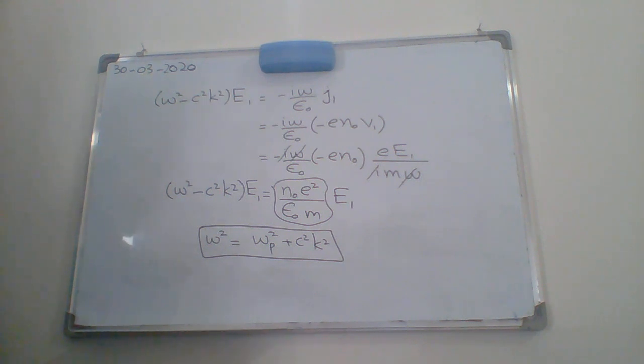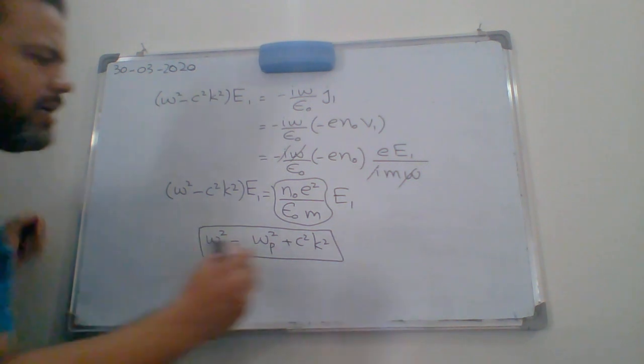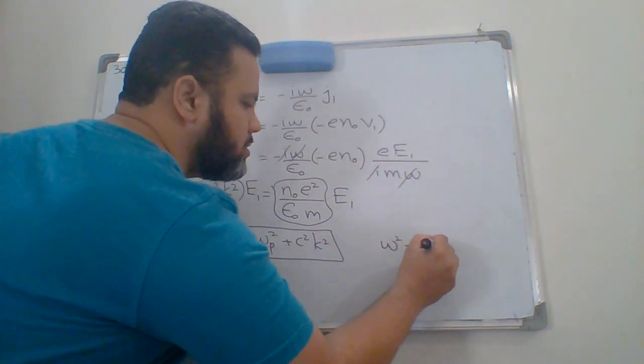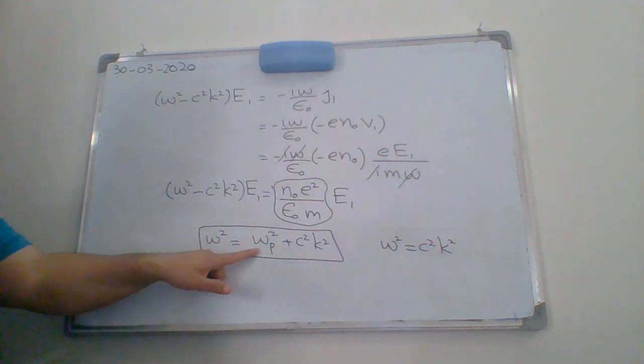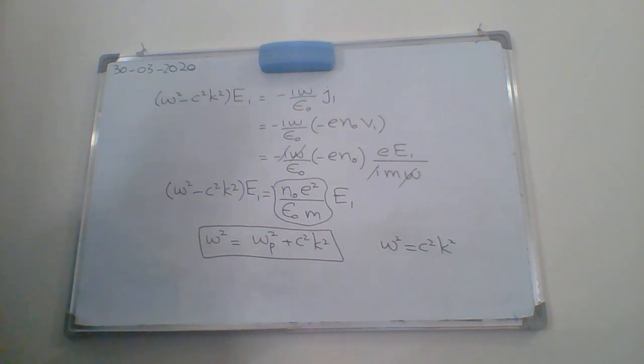Here we can see the vacuum relation of the electromagnetic waves which was omega squared equals C squared K squared is modified with this term. If we remove the plasma or the plasma is not there, then we will again get the same electromagnetic waves.